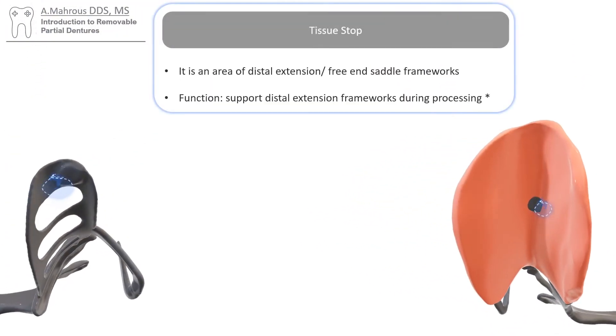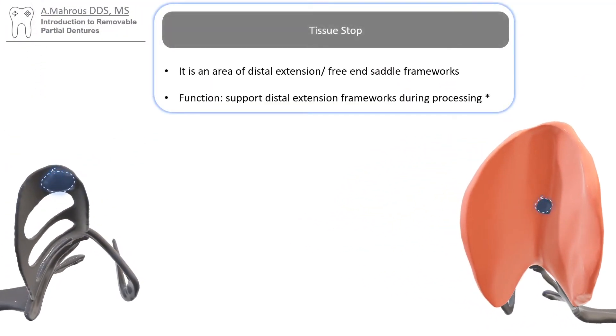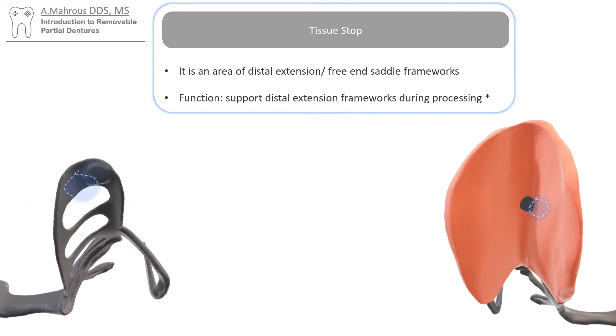Showing through the acrylic resin here is what we call a tissue stop. It's an area of the framework that sticks out of the acrylic resin and functions to support the partial denture during processing.